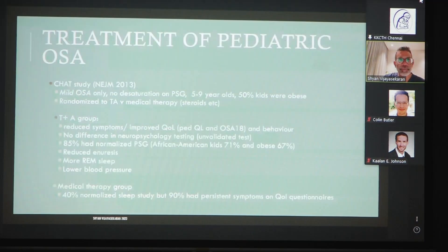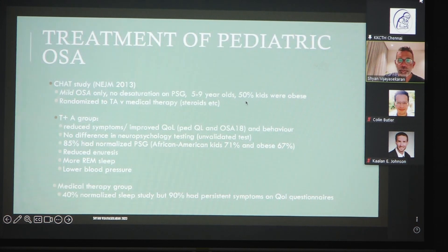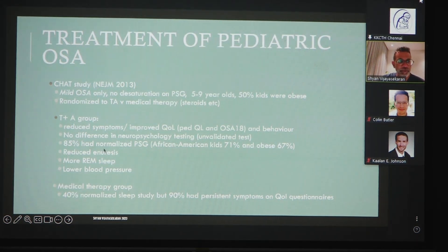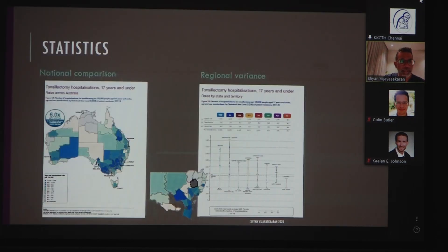In our world where making a diagnosis of OSA with sleep study access is difficult, we should be using more sleep questionnaires. The CHAT study from 2013 — a much-quoted study — showed that in children with mild OSA only, in the five-to-nine age group where 50 percent were obese, there was 85 percent normalization of sleep studies in the non-comorbid group, 71 percent in African-American children, and 67 percent even in the obese group. They also found reduced enuresis, more REM sleep, and lower blood pressures in the adenotonsillectomy group. The medical therapy group also normalized sleep studies, but approximately 90 percent had persistent symptoms on quality-of-life questionnaires.